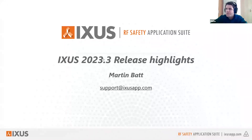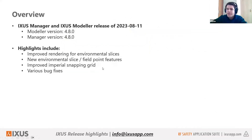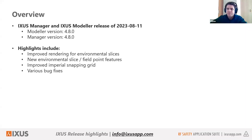This is the XS 2023.3 release. I'll show a few highlights about the release and how it will improve your experience using XS. The modeler and manager version is 4.8.0. The three main components we've worked on are: improved rendering for environmental slices, some new environmental slice and field point features, an improved imperial snapping grid especially useful for US-based clients, and as always various bug fixes.